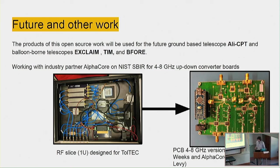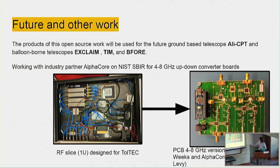Hopefully this RFSOC work will be used for the balloon-borne telescopes Exclaim, TIM, and B4, and potentially a MuMux TES experiment in the Himalayas - LACBT. We've also been working with industry partner AlphaCore, local to Tempe, on a NIST SBIR for 48 GHz up-and-down converter boards. This is an example of the IF slice we're using for TolTEC - we've tried to put everything onto one board, and it's exciting to see the miniaturization. Andrew Levy from AlphaCore is here if you want to know more about the up-and-down converter board.